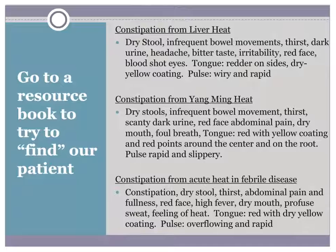Going to the book, we find: constipation from liver heat — dry stool, infrequent bowel movements, thirst, dark urine, headache, bitter taste, irritability, red face, bloodshot eyes; tongue red on the sides with dry yellow coating; pulse wiry and rapid. Anne has dry stool, infrequent bowels, and premenstrual irritability, and red spots on the sides of her tongue — but it isn't just red on the sides. Does that count? Then constipation from yangming heat adds dry stools, infrequent bowel movement, thirst, scanty dark urine, red face — all repeated from liver heat — plus abdominal pain, dry mouth, foul breath; tongue red with yellow coating, rapid slippery pulse.